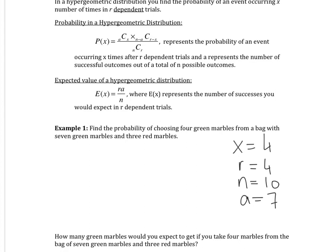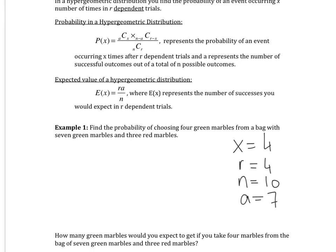Okay, so now let's go ahead and plug it in. So P of four, that's P of X, is A, which is seven. Choose X times, so N minus A, so 10 minus seven. Choose R minus X, in this case they're the same. So four minus four over N, which is 10, and R is four.